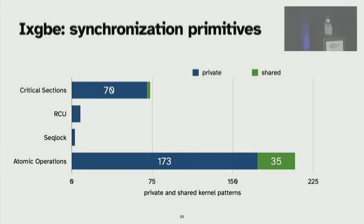Here, we show the synchronization primitives that are classified either as private or shared based on our atomic region analysis. As we hypothesized earlier, we have no shared RCUs or sequential locks in iXGBE driver. And we correctly identified the 35 shared atomic operations and three shared critical sections for which we have to call out and synchronize.